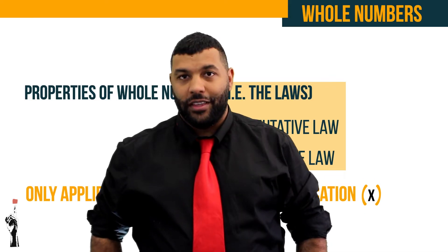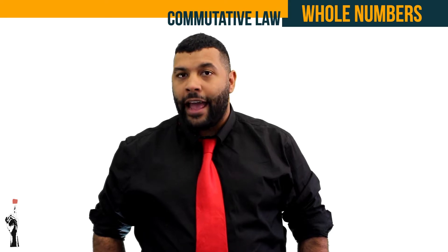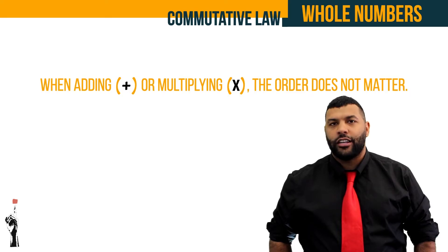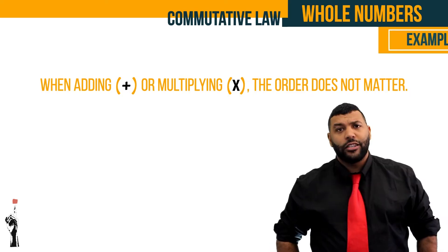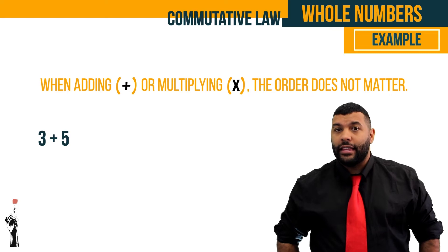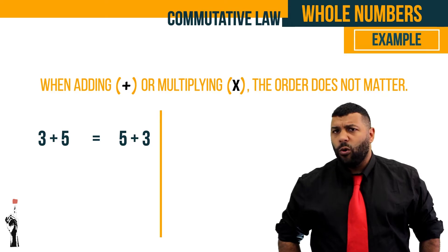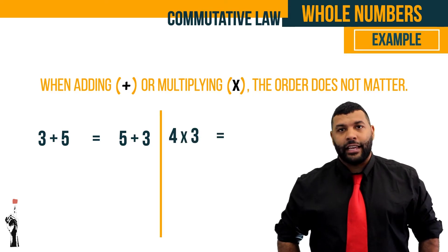Let's start off with the commutative law. The commutative law states that when adding or multiplying, the order in which we add or multiply does not matter. For example, 3 plus 5 is the same as 5 plus 3, or 4 multiplied by 3 is the same as 3 multiplied by 4.